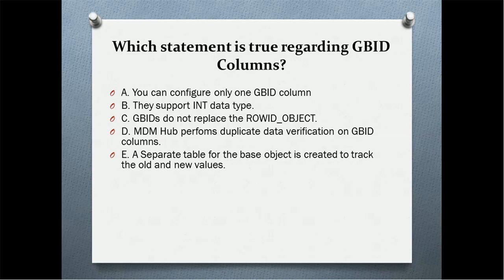Which statement is true regarding the GBID column — that is the global ID column? Options are: you can configure only one GBID column; they support int data type; GBID does not replace row ID object; MDM hub performs duplicate data verification on GBID column; a separate table for base object is created to track the old and new values.